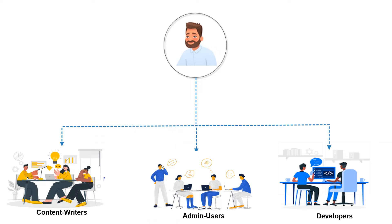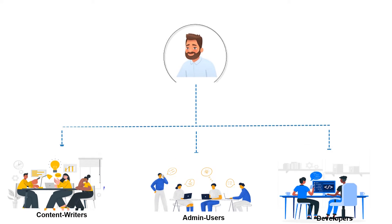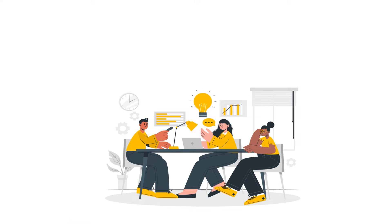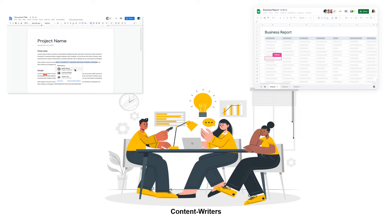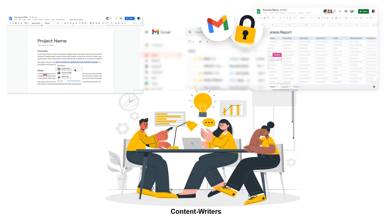Let's take an example. Kevin has three types of groups of employees in his organization. For content writers, Kevin only wants to give them access to Google Docs and Google Sheets and restrict them from using Gmail.